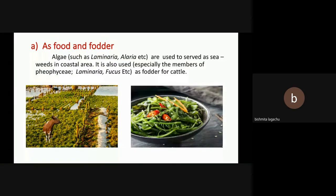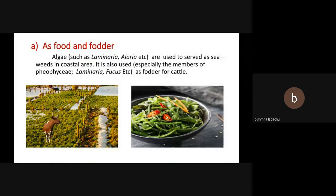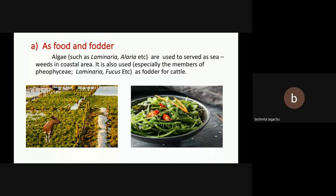In coastal areas, algae such as Laminaria, Alaria, etc. are used to serve as seaweeds. Members of phaeophyceae, for example Laminaria, Fucus, etc. are used as fodder for goats and cattle.